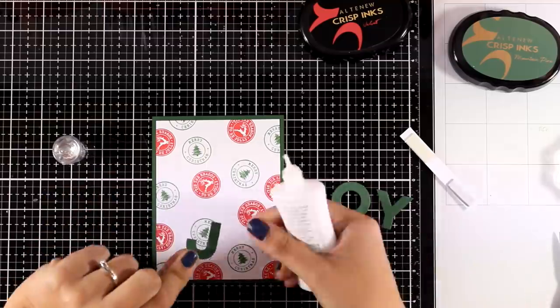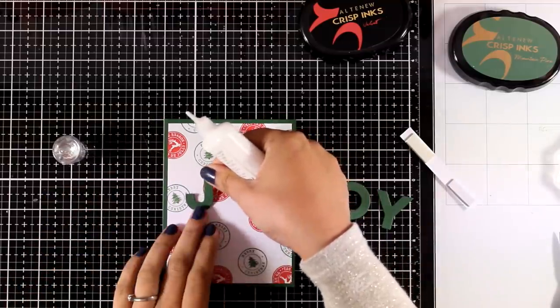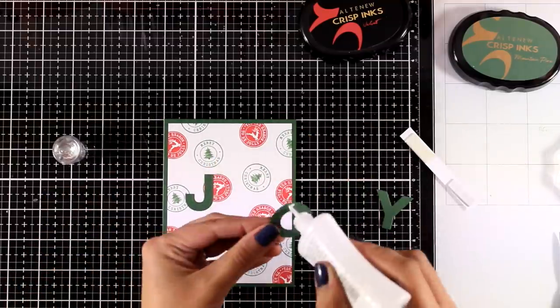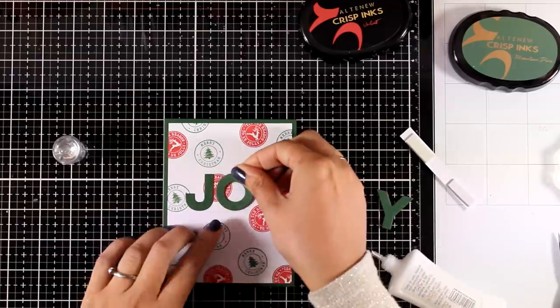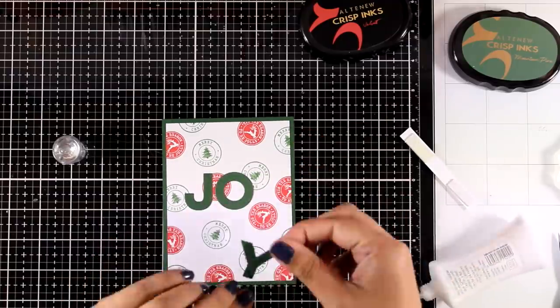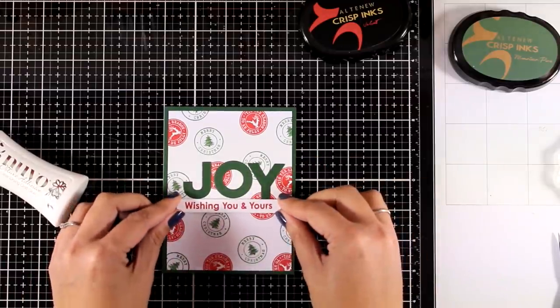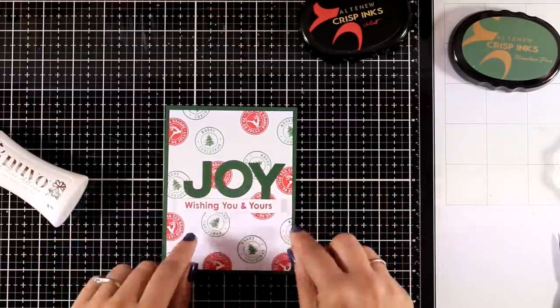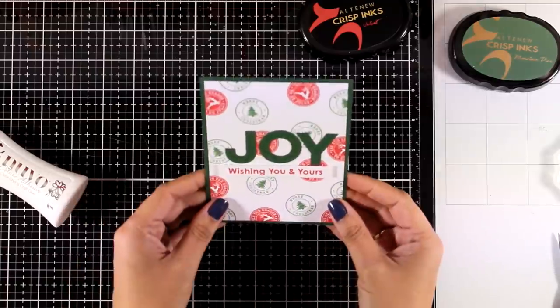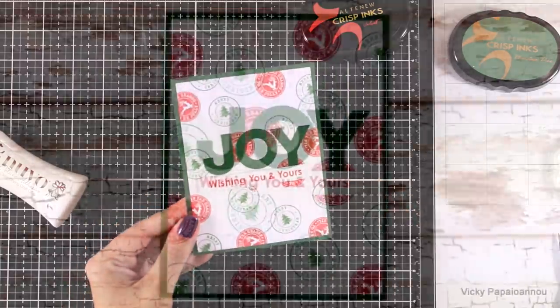Now to finish off my card all I need to do is to add a sentiment. For that I went with the word joy and I'm also going to finish it off by sticking down the rest of the sentiment in a very thin strip of paper. So we basically used the small stamps from the stamp set to create our own pattern paper and then on top you can stick any sentiment that you like.